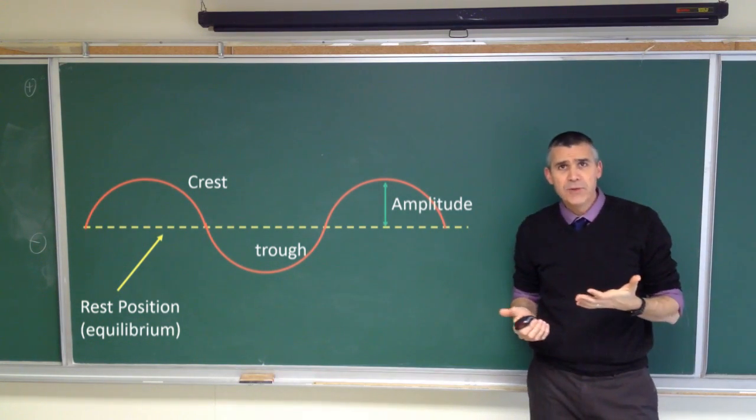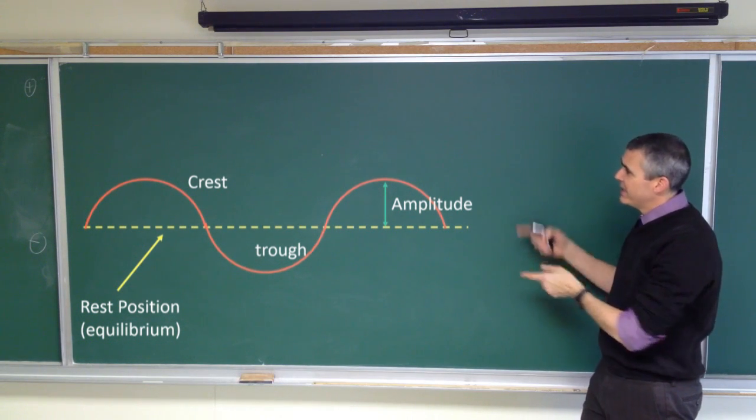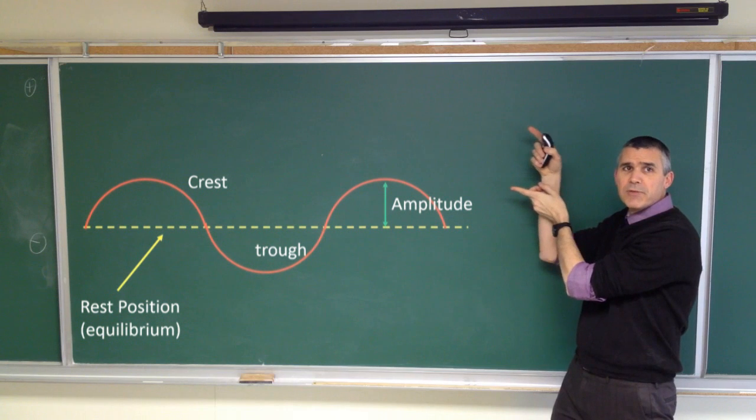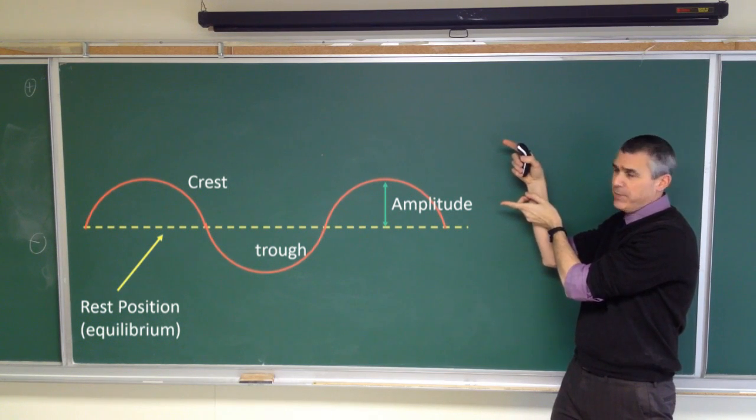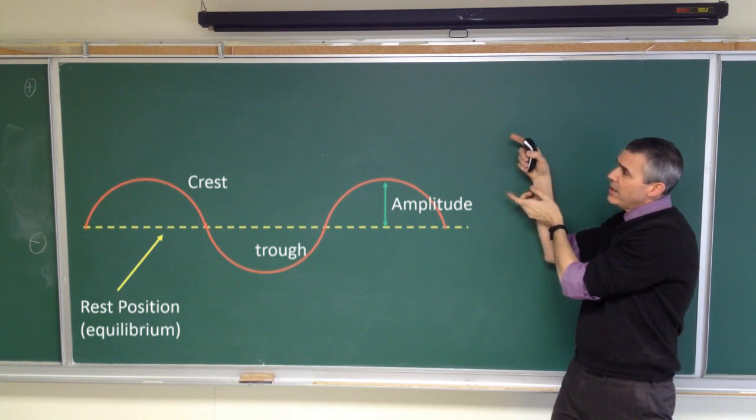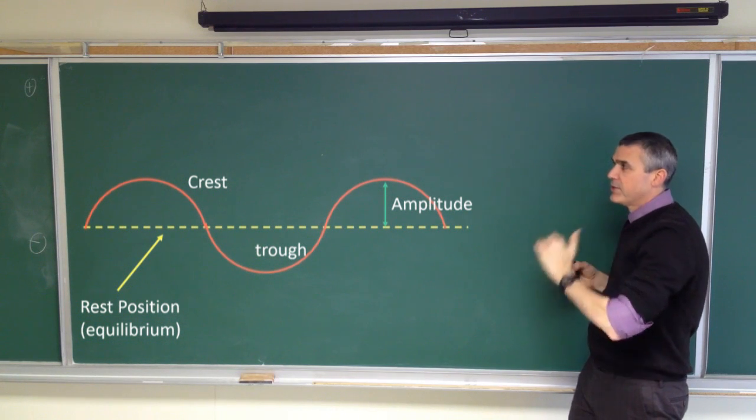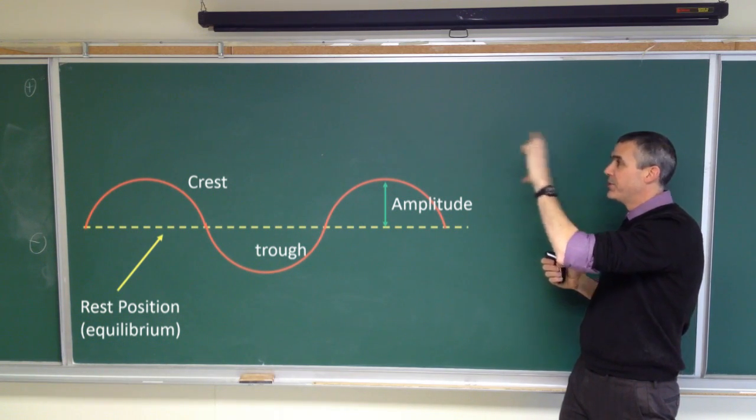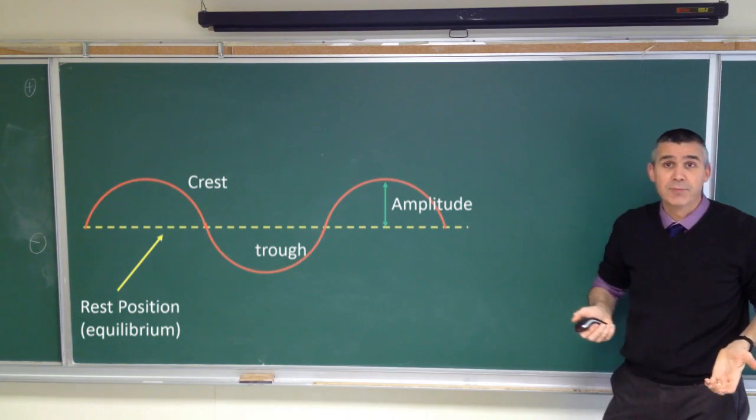We have amplitude. So amplitude is our displacement, or our maximum displacement, from rest position. So it's not the crest to trough distance, but it's that displacement away from the rest position.